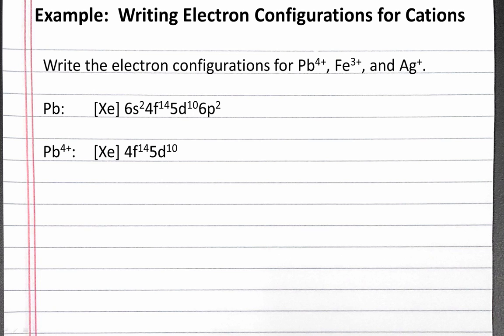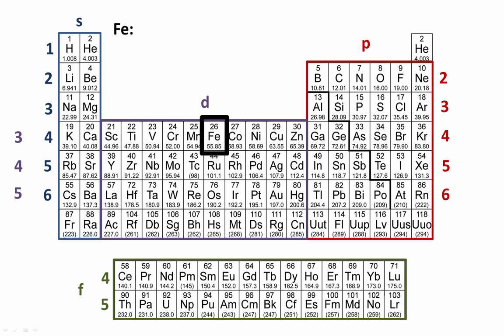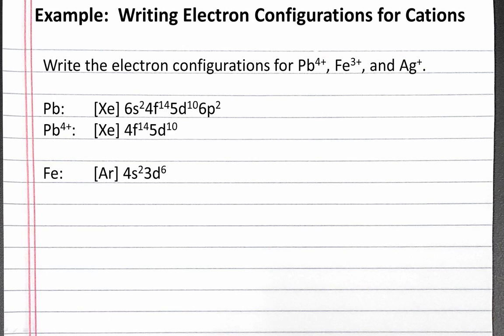Next, let's write the electron configuration for iron. The noble gas that precedes iron is argon. Then we begin filling the 4s subshell with potassium to calcium — so it's 4s2. And then we have 6 electrons to move over to iron in the 3d subshell. So iron's electron configuration is argon 4s2 3d6.